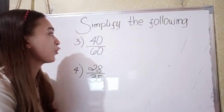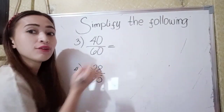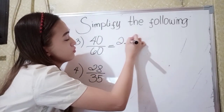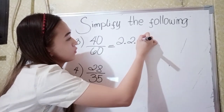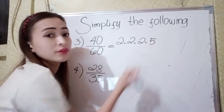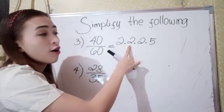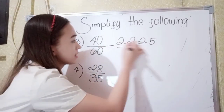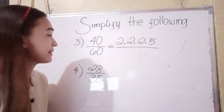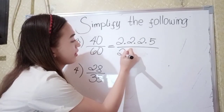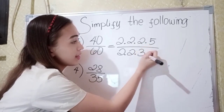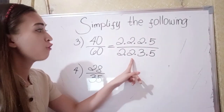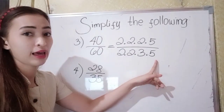In number 3, we have 40 over 60. So what are the factors of 40? We have 2 times 2 times 2 times 5. Because 2 times 2 is 4, 4 times 2 is 8, 8 times 5 is 40. What are the factors of 60? We have 2 times 2 times 3 times 5. Because 2 times 2 is 4, 4 times 3 is 12, 12 times 5 is 60.